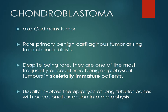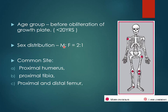It usually involves the epiphysis of long tubular bones with occasional extension into the metaphysis. The characteristic location is epiphyseal, but it can extend to the metaphysis as in our case. It occurs usually before obliteration of the growth plate — that is, before 20 years of age — and is more common in males. Common sites include the proximal humerus, proximal tibia, and proximal and distal femur.